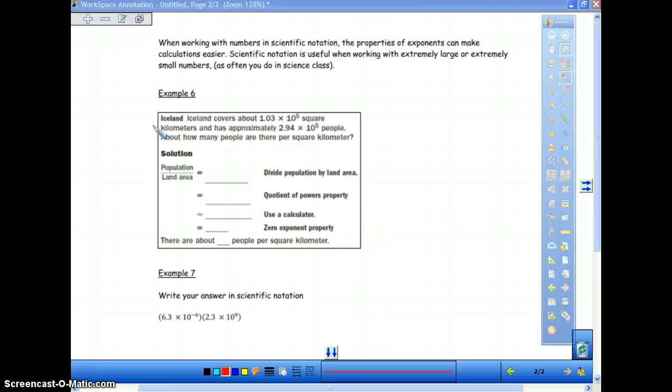And has approximately 2.94 times 10 to the 5th people. About how many people are there per square kilometer? Well, we're just going to set this up as a regular fraction. The population will go on top, so that will be 2.94 times 10 to the 5th. And on the bottom will be the land area, which is 1.03 times 10 to the 5th. Okay, so we're just going to divide this out. We're going to do this in two separate things. We're going to use the quotient of powers property with these. So it's going to be 10 to the 5 minus 5, which is equal to 10 to the 0. And then we're going to divide these two to figure out what this decimal is. So doing it in the calculator, 2.94 divided by 1.03 is actually 2.85. So there are about 2.85 people per square kilometer.